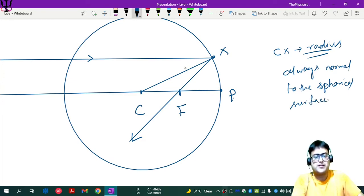So that means this is the normal. If you extend this line, you can consider that to be the normal at the point of contact of X. So now if this angle is I, which is the angle of incidence, this angle will also be I. That is the angle of reflection.